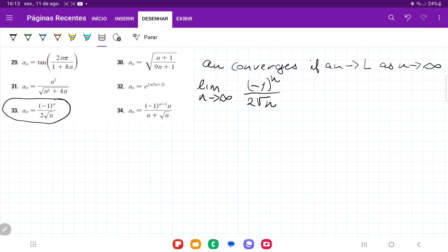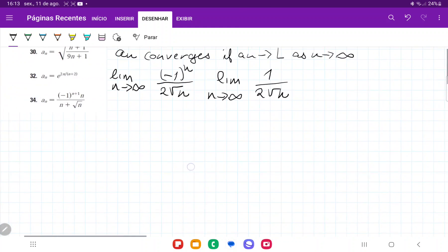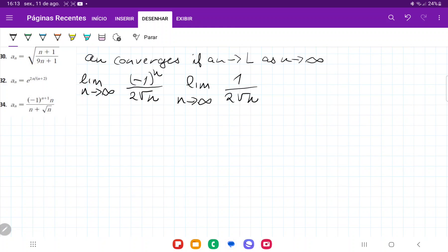What we're going to do is take the absolute value. Let's take the limit as n approaches infinity of 1 over 2 square root of n. We've left the negative 1 to the power of n momentarily to the side and just taken the absolute value, which is 1 over 2√n, and we're going to see how this behaves.